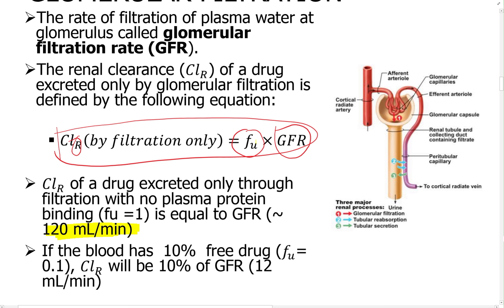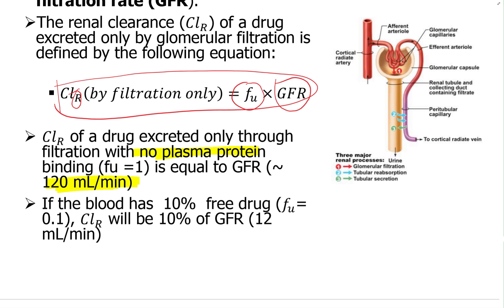When there is plasma protein binding, when we see CLR of a drug excreted with no plasma protein binding — so when fu is equal to 1, there is no plasma protein binding — then clearance by filtration is going to be the same as GFR, which is 120 milliliters per minute. If there is, for example, 10% free drug, then CLR — clearance by filtration — would be 10% of GFR. This is a major concept we'll use in various calculations.